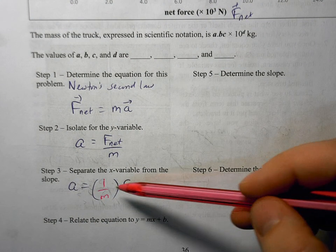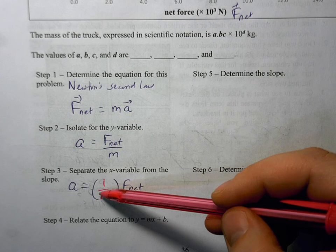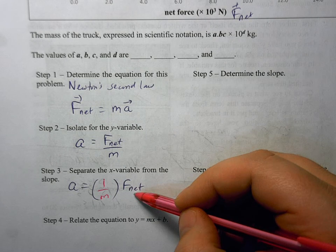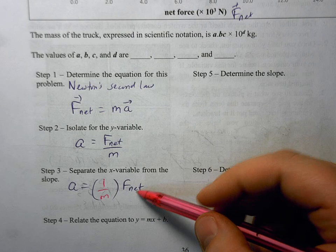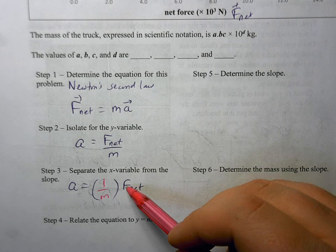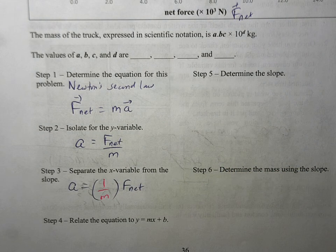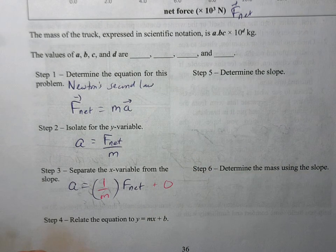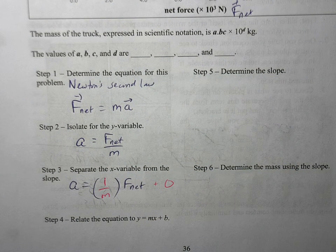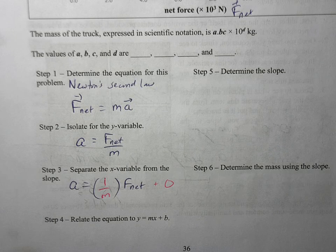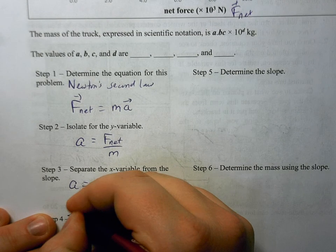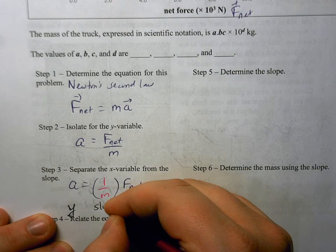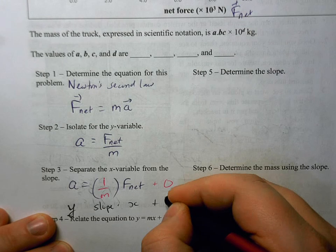One times F_net will give me F_net. There's no denominator here but it's explicitly one, that is going to give us m. So this is still F_net over m, just written in a slightly different way. And then we could also tack on a plus zero here. So if we look at this very carefully, this very much looks like something of the form y equals slope times x plus b.